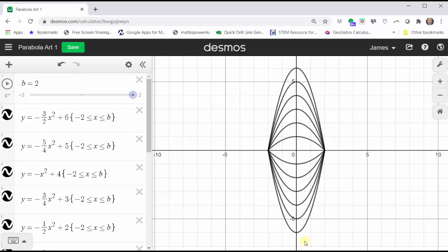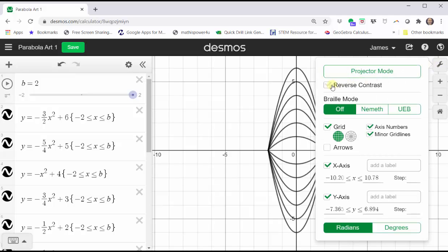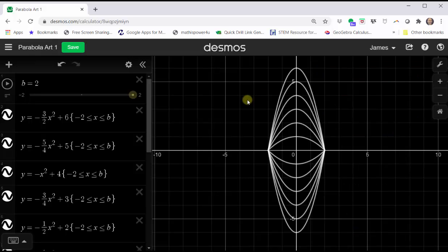A couple other things we can do. If we click the wrench in the upper right-hand corner and click reverse contrast, the coordinate plane is now black and the graph is white.